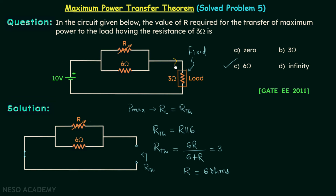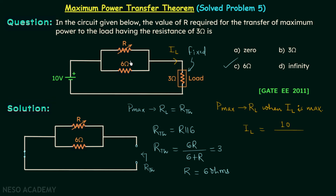I will assume current through the load as I_L. We know maximum power will be transferred to RL when I_L is maximum, because power equals the square of current multiplied by the resistance. I_L in this case equals 10 volts divided by R in parallel with 6. With R equal to 6, we get 6 parallel with 6 giving 3, in series with 3, totaling 6 ohms. So I_L equals 10 over 6.